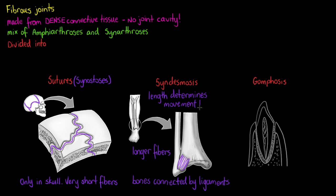However, there are very limited exceptions to this, such as the interosseous membranes that connect our ulna and radius along their length, resulting in a diarthrotic joint.